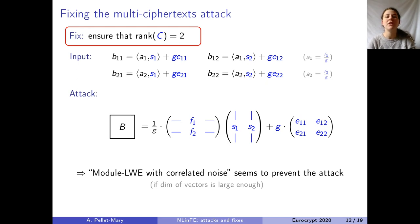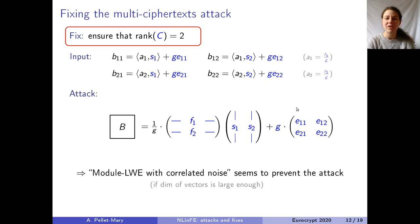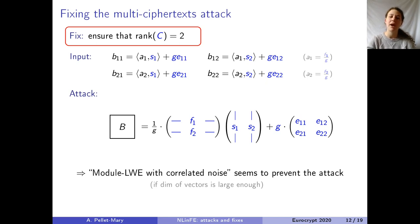A few words on why the vectors need to be large enough — why dimension 2 for F and S is not sufficient. You can generalize the attack by taking more than two labels and more than two secrets, making the matrices taller and wider until you get a matrix that is not full rank. You can always get a non-full-rank matrix by taking sufficiently many labels and secrets. However, if the dimension is large enough, the determinant of the resulting matrix — even if all entries are small — is a product of a large number of small terms, which is not going to be small. So for large enough vectors, we hope the attack is prevented and the problem is hard.